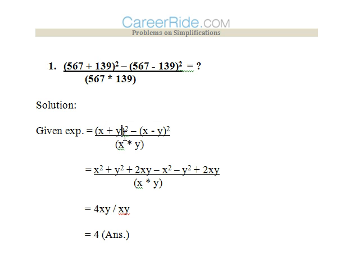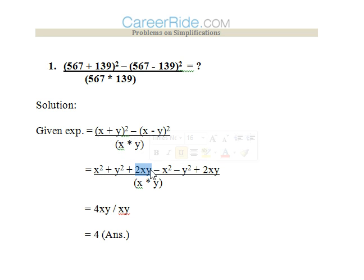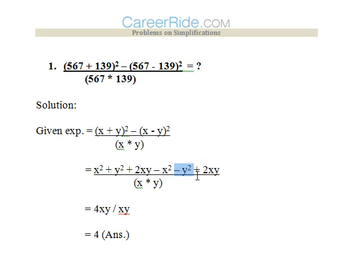After substitution it becomes (x + y)² minus (x - y)², all over x·y. Expanding: (x + y)² = x² + y² + 2xy, and (x - y)² = x² + y² - 2xy. Because of the minus sign in front, the second expansion becomes: minus x² minus y² plus 2xy. The denominator remains x·y.